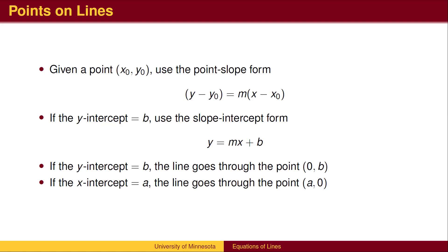In addition to the slope, we need to know a point on the line. If given an arbitrary point, we can use the point-slope form.